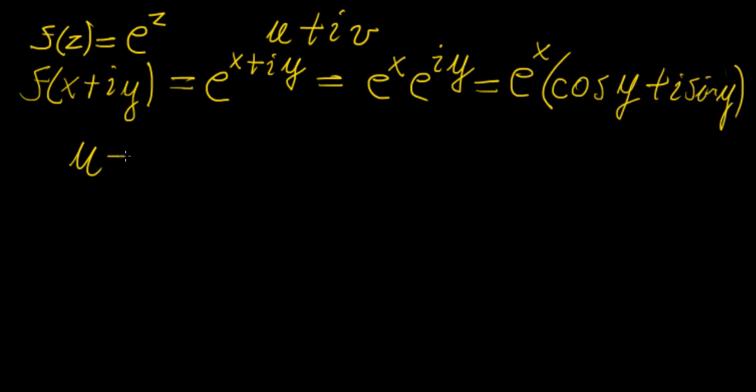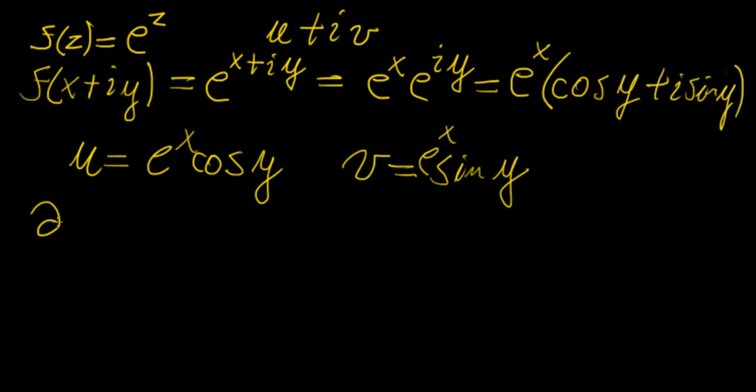And so basically this is the representation of this complex function in terms of u and v. So you can see that the real part now is e^x cosine of y and the imaginary part is going to be e^x sine y.